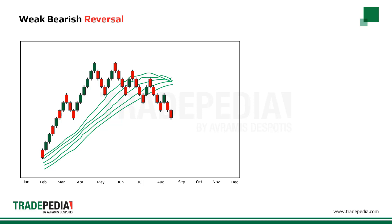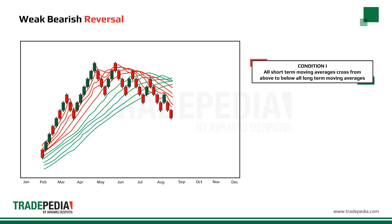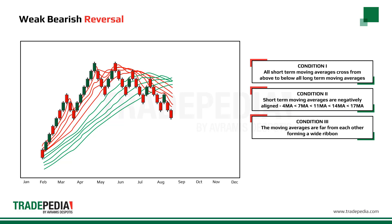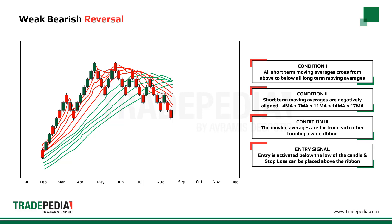A weak bearish reversal signal is given when the following conditions are met. Condition one: all short-term moving averages cross from above to below all long-term moving averages. Condition two: short-term moving averages are negatively aligned — that is, the 4 period average is below the 7th, the 7th below the 11th, the 11th below the 14th, and so on. Condition three: the moving averages are far from each other, forming a wide ribbon, giving a weak signal. The entry is activated below the low of the candle that generated the signal, and a stop-loss can be placed above the moving average ribbon.